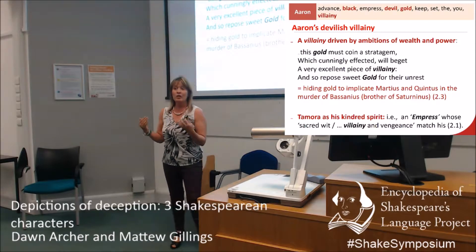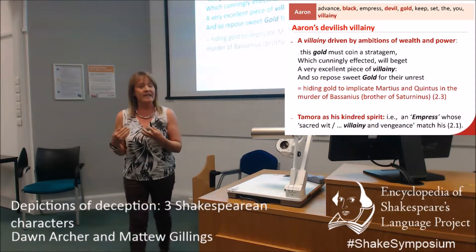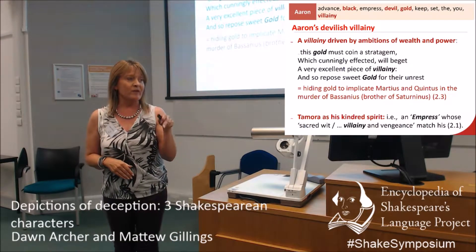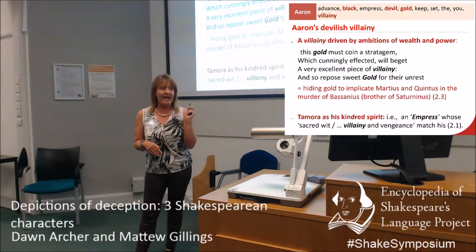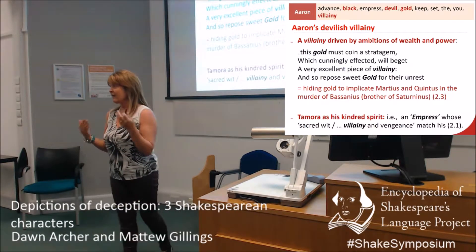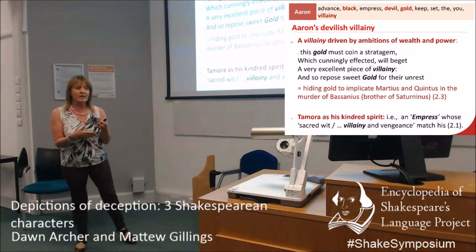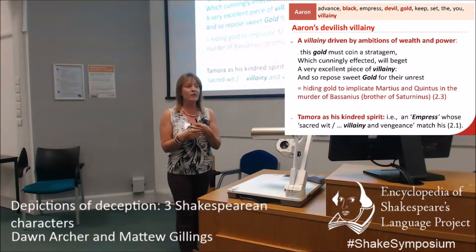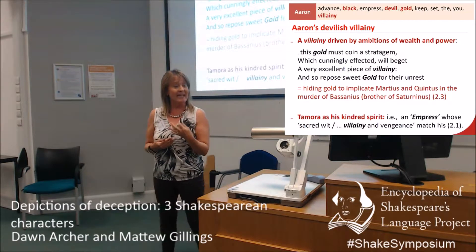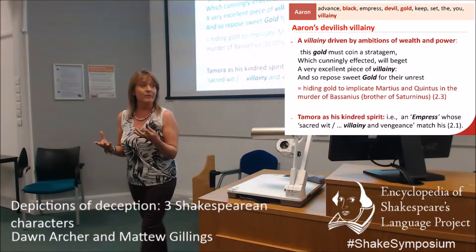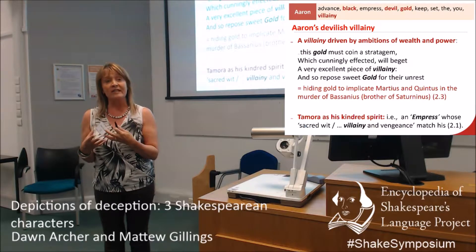To set the scene, this is him talking about why he's going to hide the gold which he can then use to implicate two other characters, Martius and Quintus, in the murder of Bassianus — the brother of Saturninus, who is now emperor and is with Tamora — and it's Aaron and Tamora who are having an affair. So we have a character who's telling us he's a villain, enjoying himself while being a villain, and his key words point us to that. But he also tells us through those same keywords about what he thinks of Tamora — we've suggested she ends up being his kindred spirit.